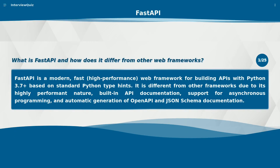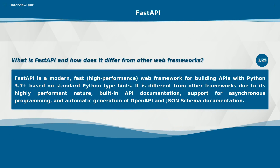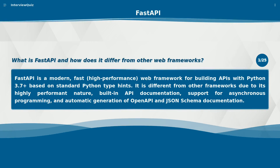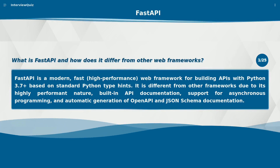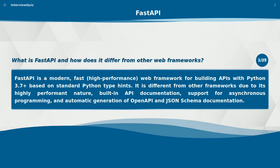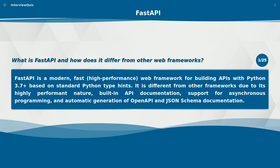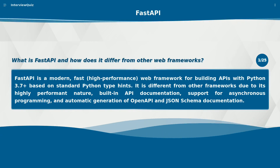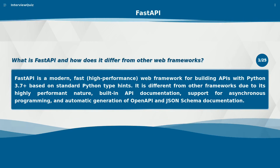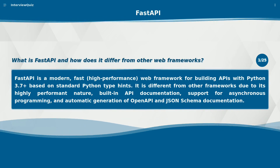What is FastAPI and how does it differ from other web frameworks? FastAPI is a modern, fast, high-performance web framework for building APIs with Python 3.7+ based on standard Python type hints. It differs from other frameworks due to its highly performant nature, built-in API documentation, support for asynchronous programming, and automatic generation of OpenAPI and JSON schema documentation.